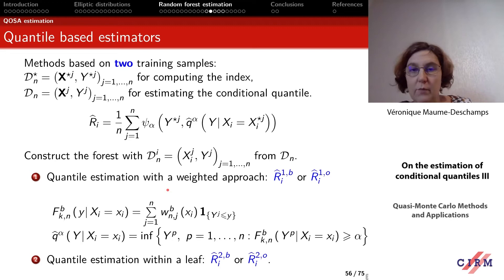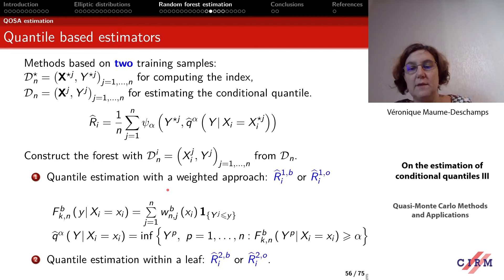For the quantile-based estimator, we need two training samples. One is called D_N star, which we will use to compute the index. Before computing the index, we use D_N in order to estimate the conditional quantile. We assume that D_N star and D_N are independent. We define a quantity: here we have an estimation of the conditional quantile at level alpha of Y, knowing that coordinate X_i equals x_{i,j}. We compute this estimation of the conditional quantiles and plug it into the mean, which allows us to estimate the expectation.